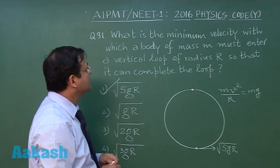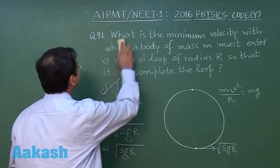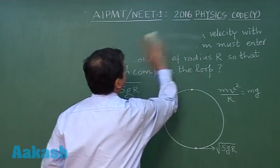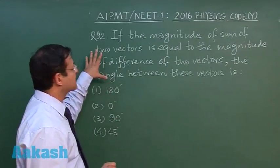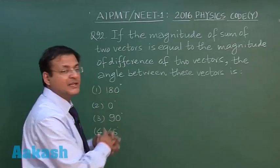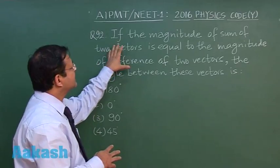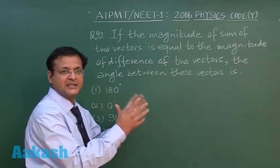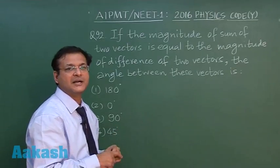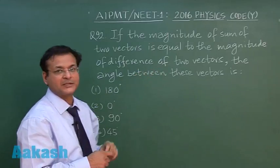Now let us talk about the next question, question 92. This is again a very straightforward question that has been directly asked many times. It says that if the magnitude of sum of two vectors is equal to the magnitude of difference of two vectors, then what is the angle between these vectors?